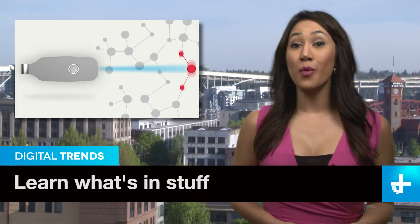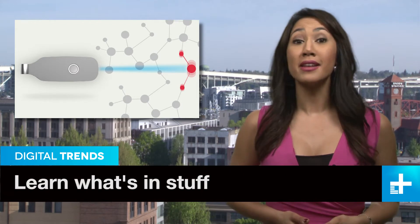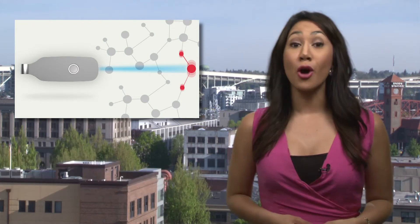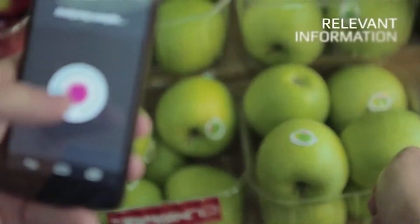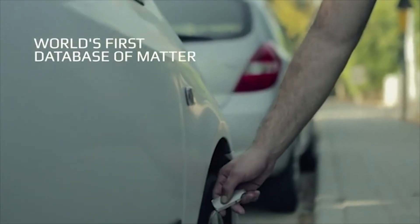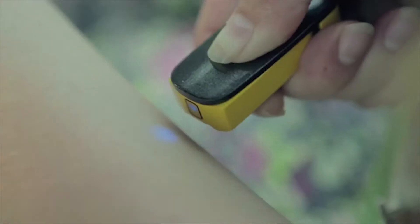If you've ever wondered what's inside the things around us, like food, plants and medicine, you'll soon be able to find out on your smartphone. The Sci-O is a pocket-sized molecular spectrometer, and it works by shooting near-infrared light into an object. Then it scans for unique optical signatures given off by the molecules inside.